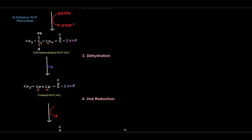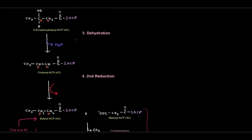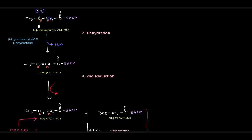Next is the dehydration reaction, where we lose water. We lose the OH and one of the hydrogens as water to get enoyl-ACP. This reaction is catalyzed by beta-hydroxyacyl-ACP dehydratase — dehydratase makes sense because we're losing water, and it acts on the beta-hydroxyacyl-ACP, where the beta-carbon has a hydroxy group. That gives us the enoyl-ACP.